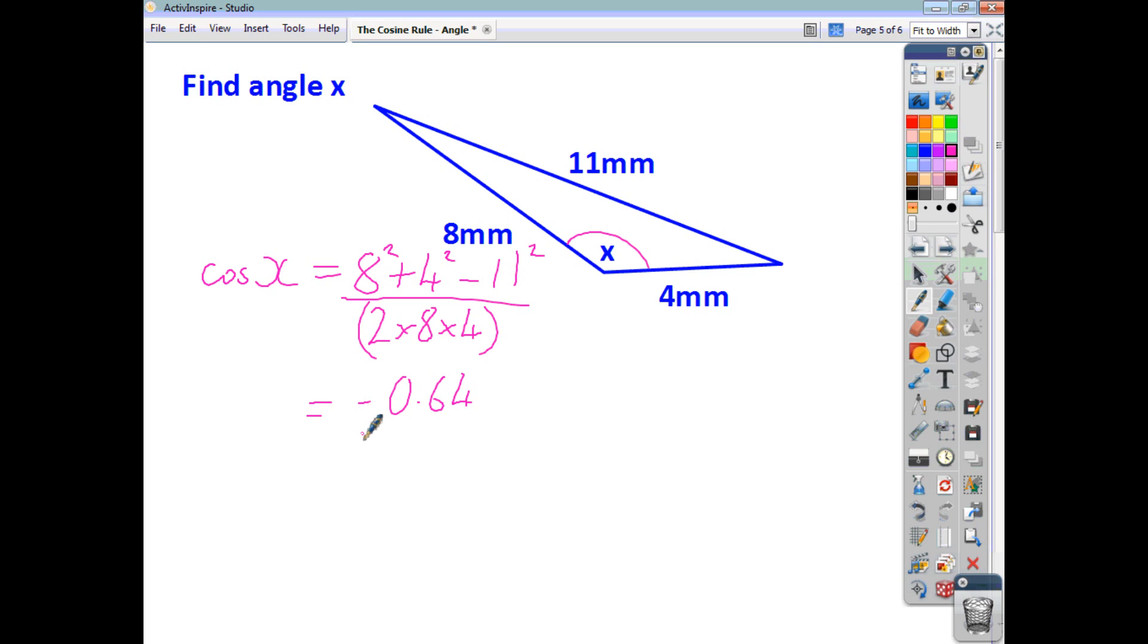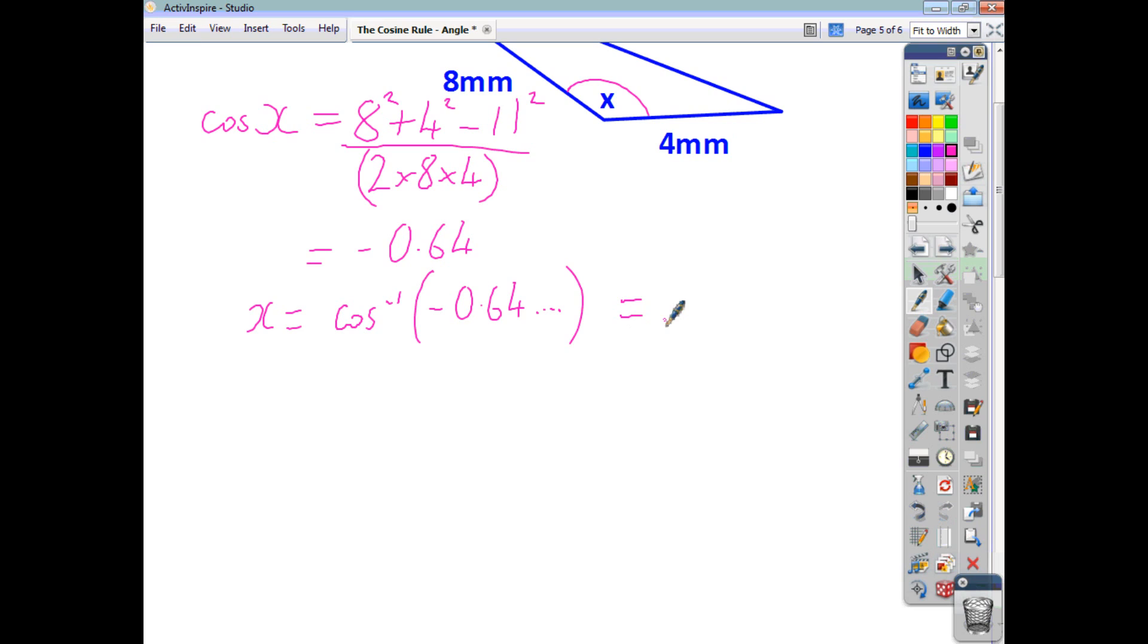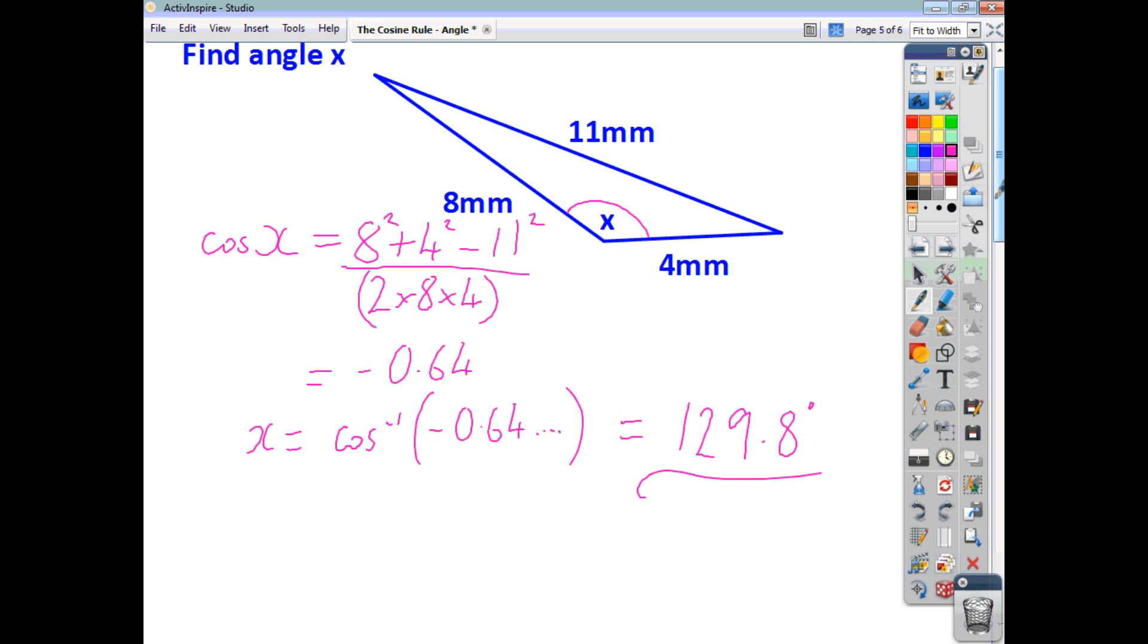You want your angle, so you say X is going to be inverse cos of negative 0.64, and so on. Although you've rounded it on paper, don't round it on your calculator, and you work that out to give you, to one decimal place, an angle of 129.8 degrees. And that looks in proportion to the rest of the triangle, that looks accurate, and that's how you use the cosine rule to find a missing angle.